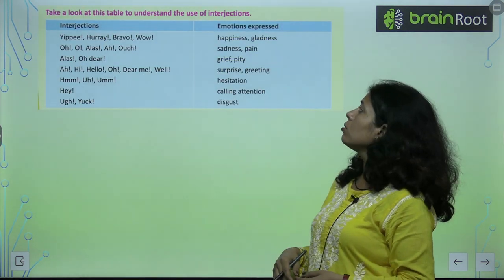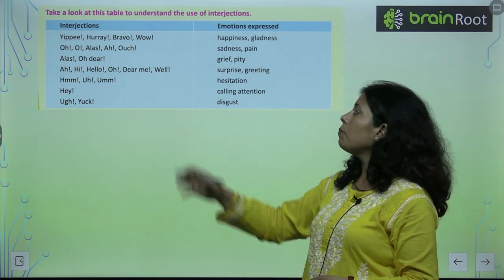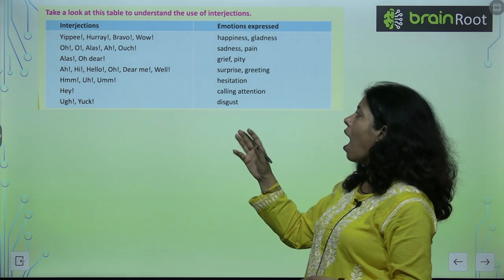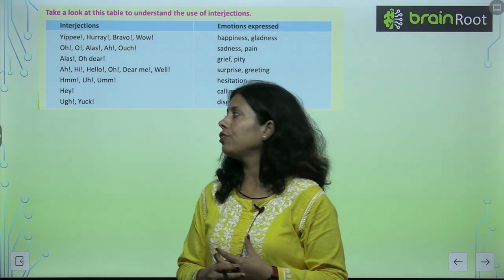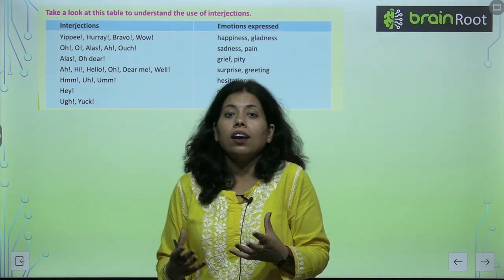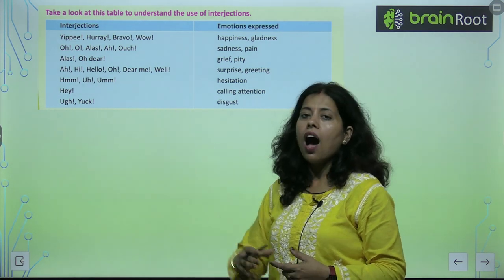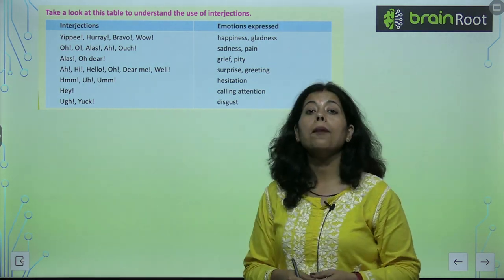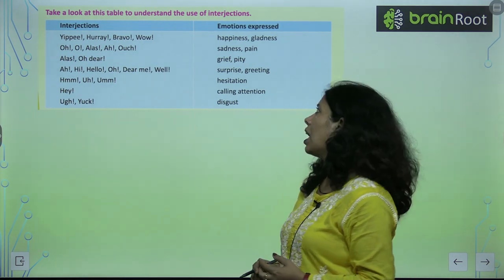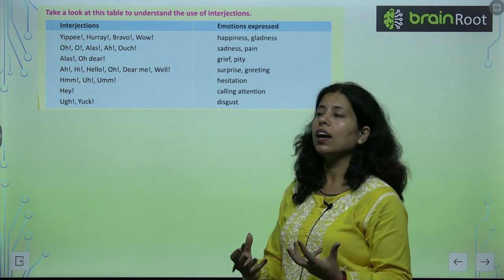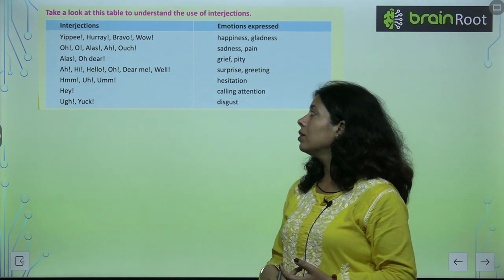Take a look at this table to understand the use of interjections by emotion. Yippee, hooray, bravo, wow — these express happiness and gladness. Ouch and similar words express sadness and pain. Alas, oh dear — these express grief and pity. Oh hello, dear me, well — these express surprise and greeting.